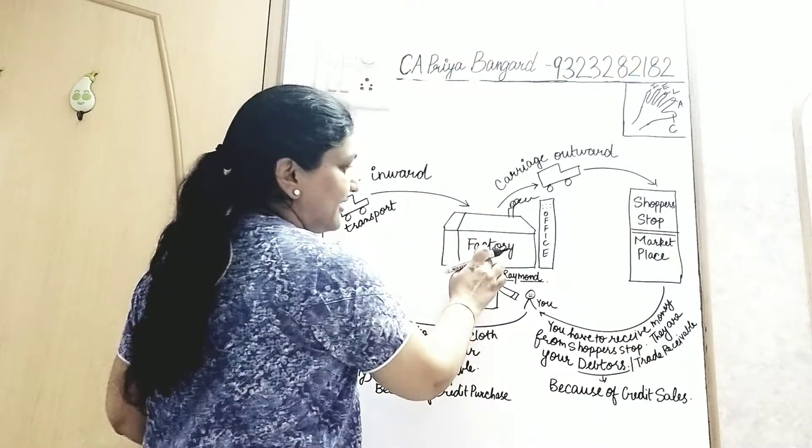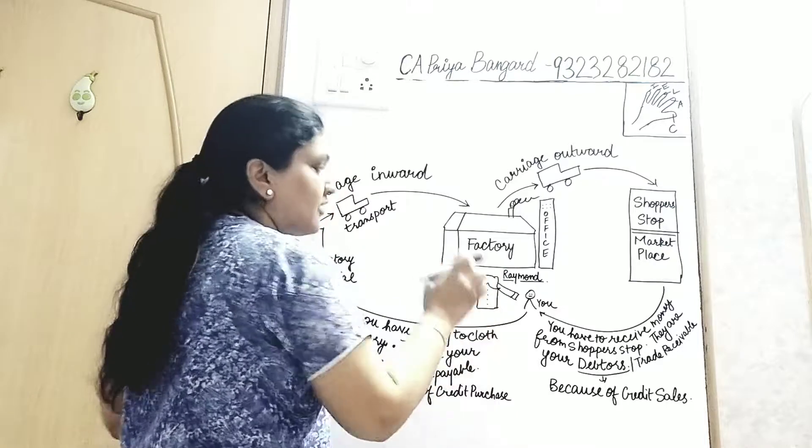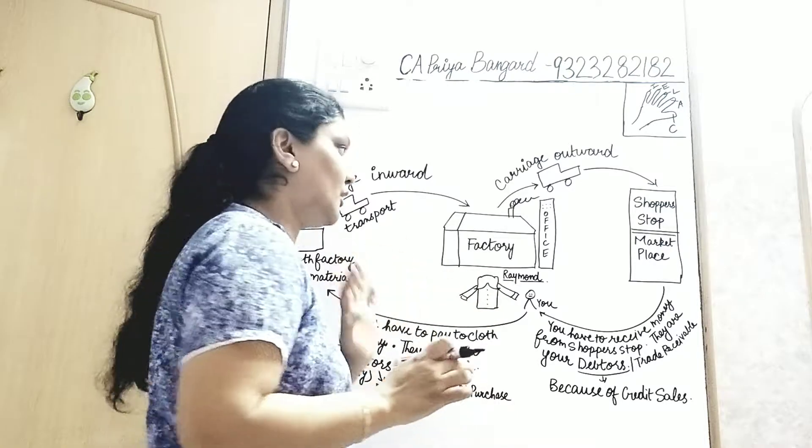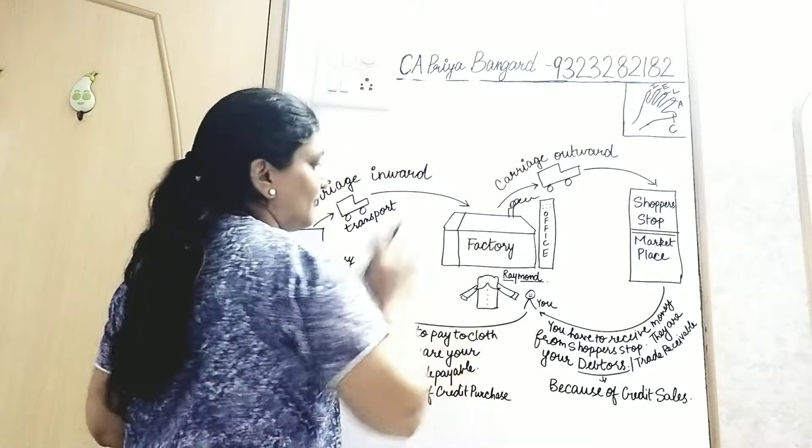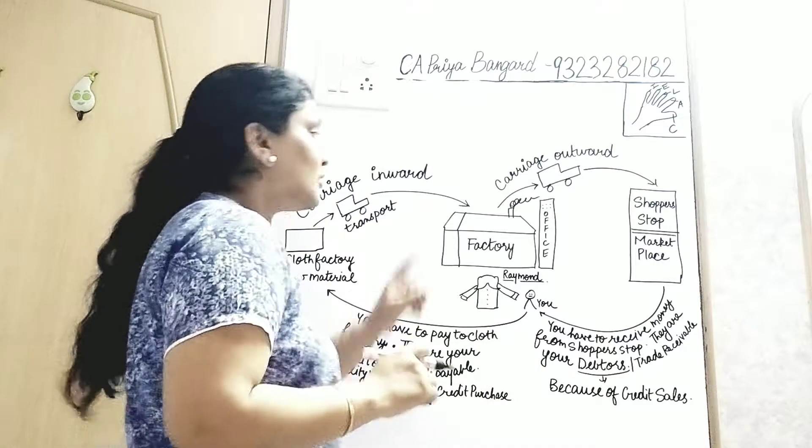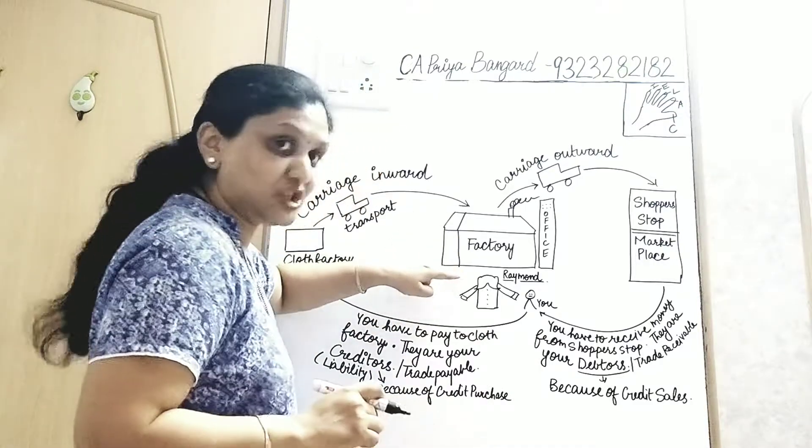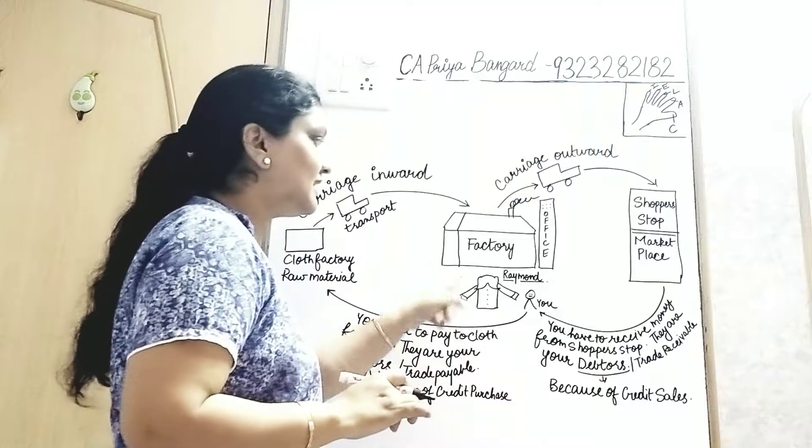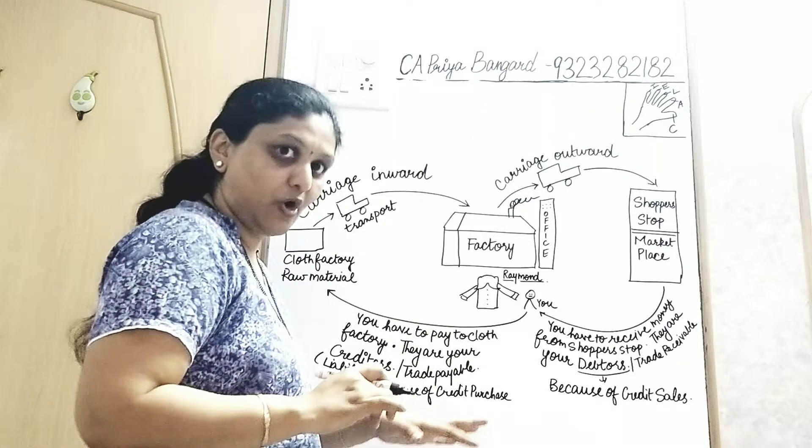This is your factory making shirts. For example, you are Raymond brand or Louis Philip brand, whatever you want to choose. This is your factory making shirts and this is you. Now, since you are making shirts, shirts is your final or finished product.